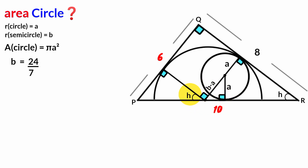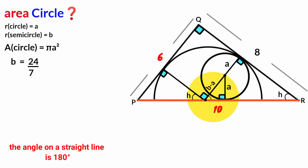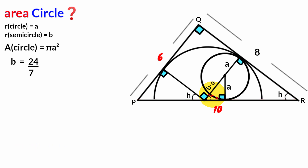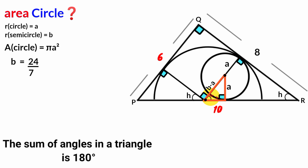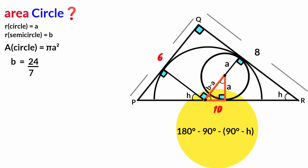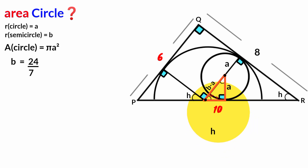Angle H, a right angle, and another angle lie on the same straight line. Since angles on a straight line sum to 180°, and we have H and 90°, the third angle is 180° − H − 90° = 90° − H. Looking at this triangle: since two angles are 90° and (90° − H), the third angle must be 180° − 90° − (90° − H) = H.